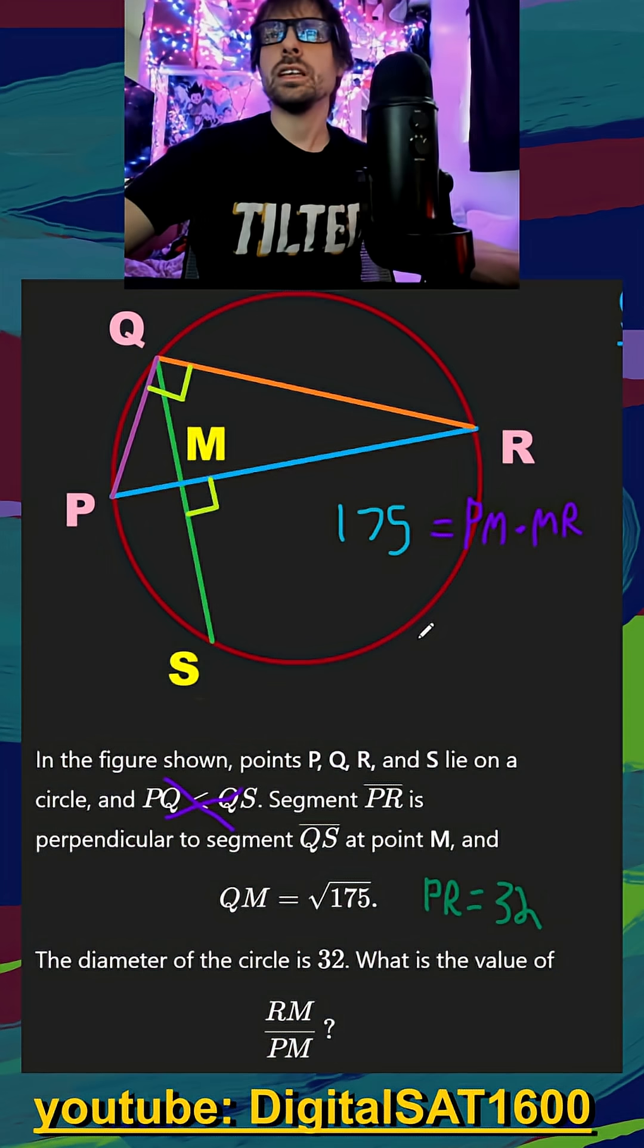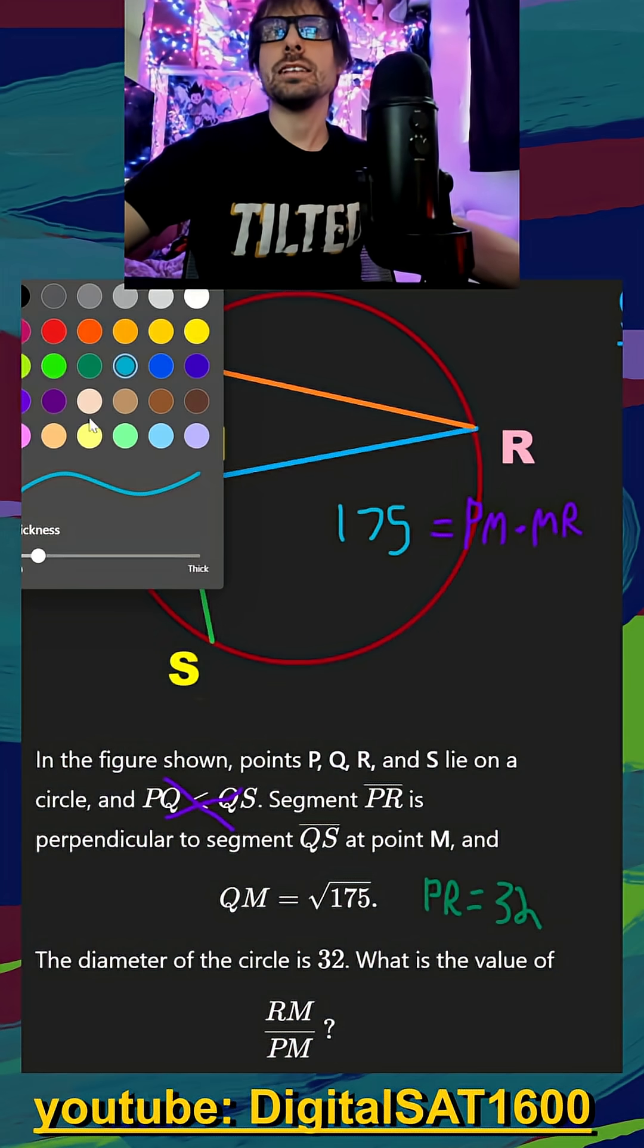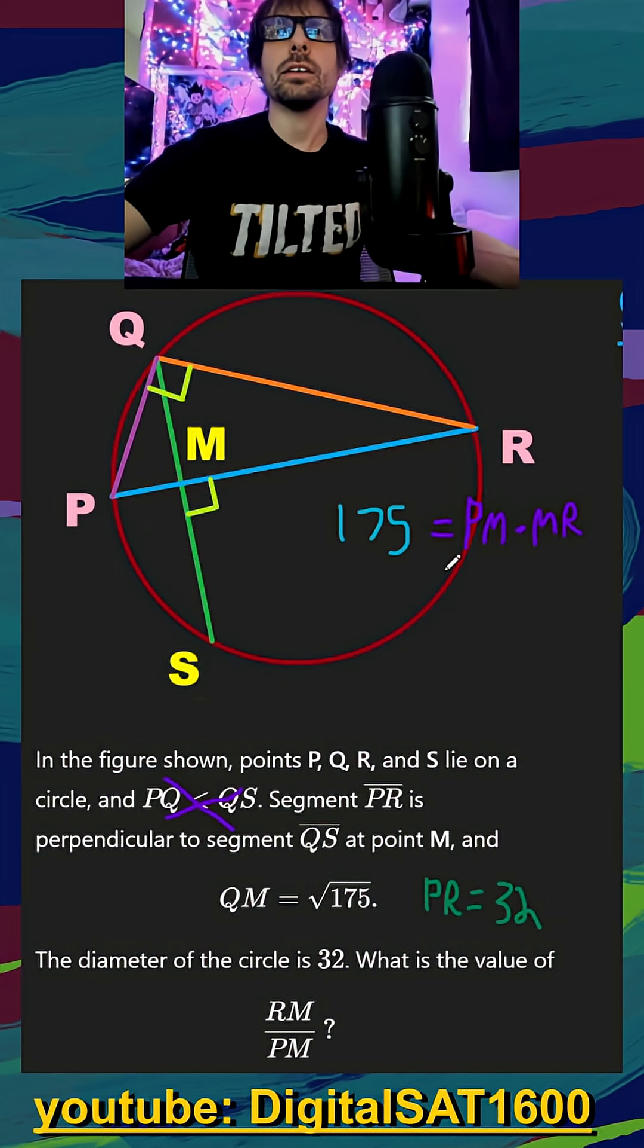And then while we don't know the individual values of PM and MR, we do know that their total, their sum, is equal to 32. So I think we can make an equation here. We can replace, let's make this X and let's make this Y. So we know that 175 is equal to X times Y. We also know that X plus Y, the sum of these two segments, are going to equal their total, their diameter, 32.